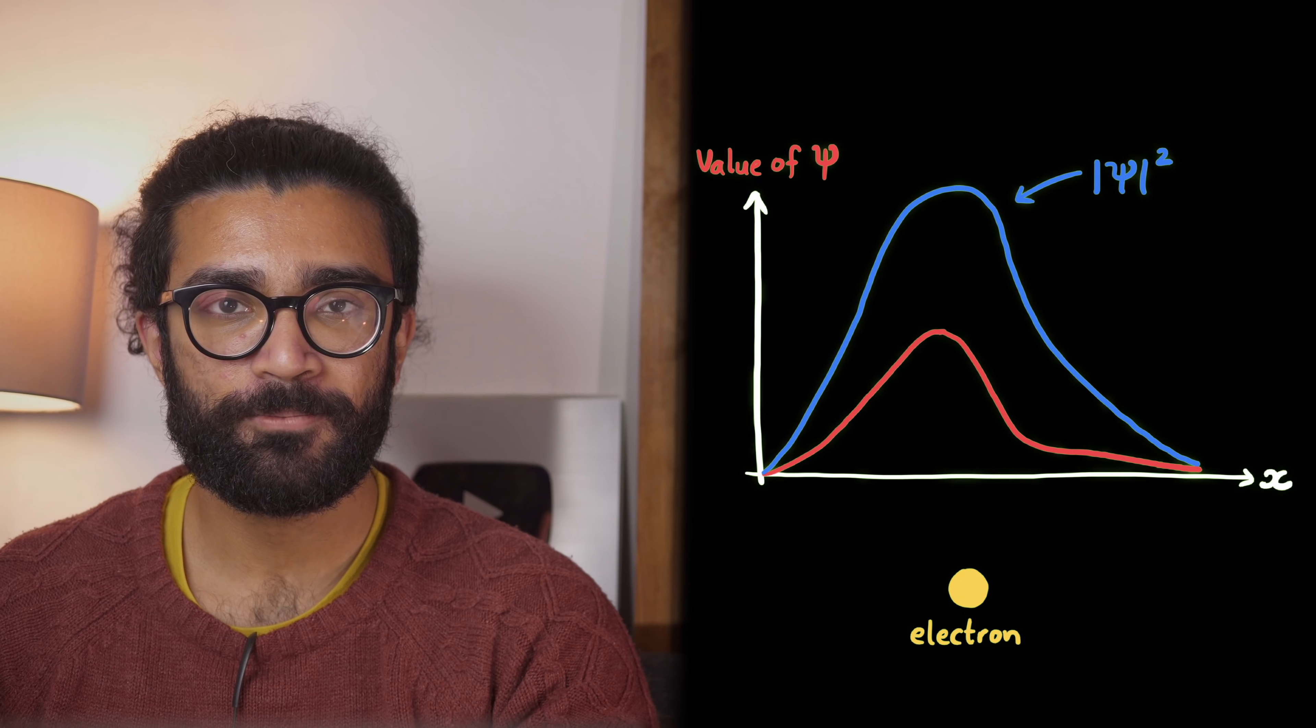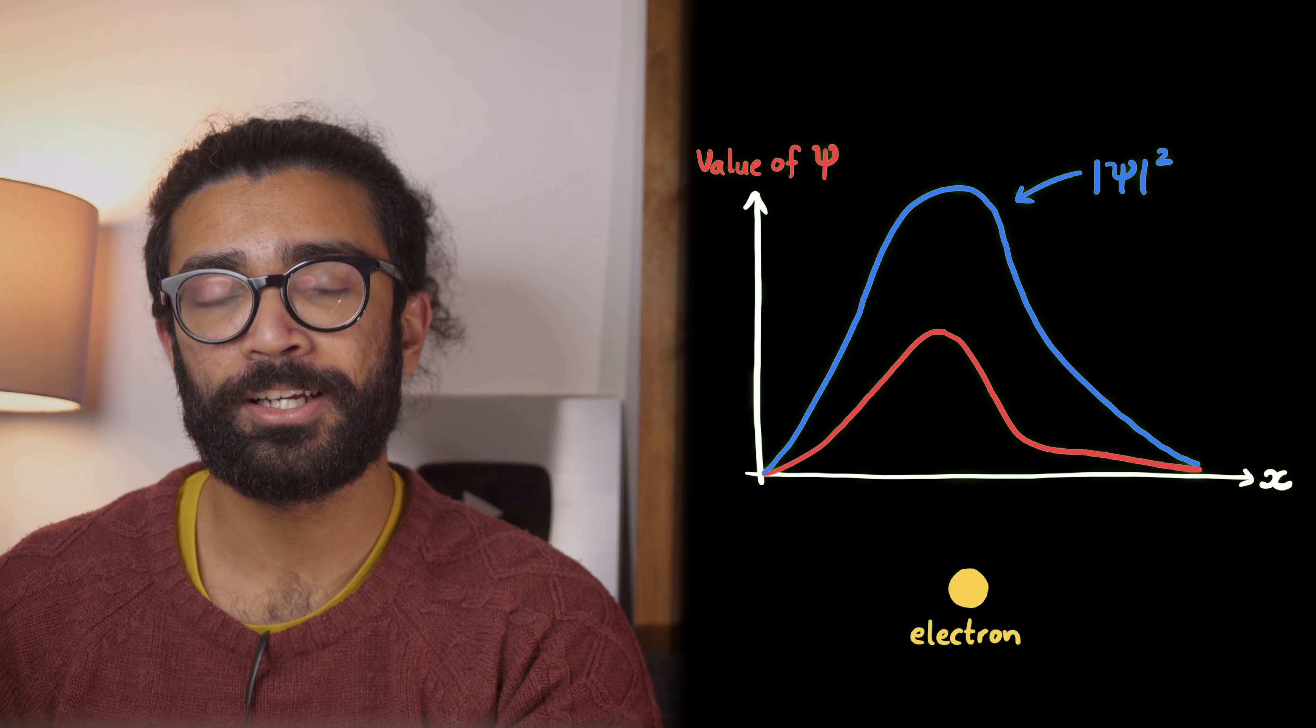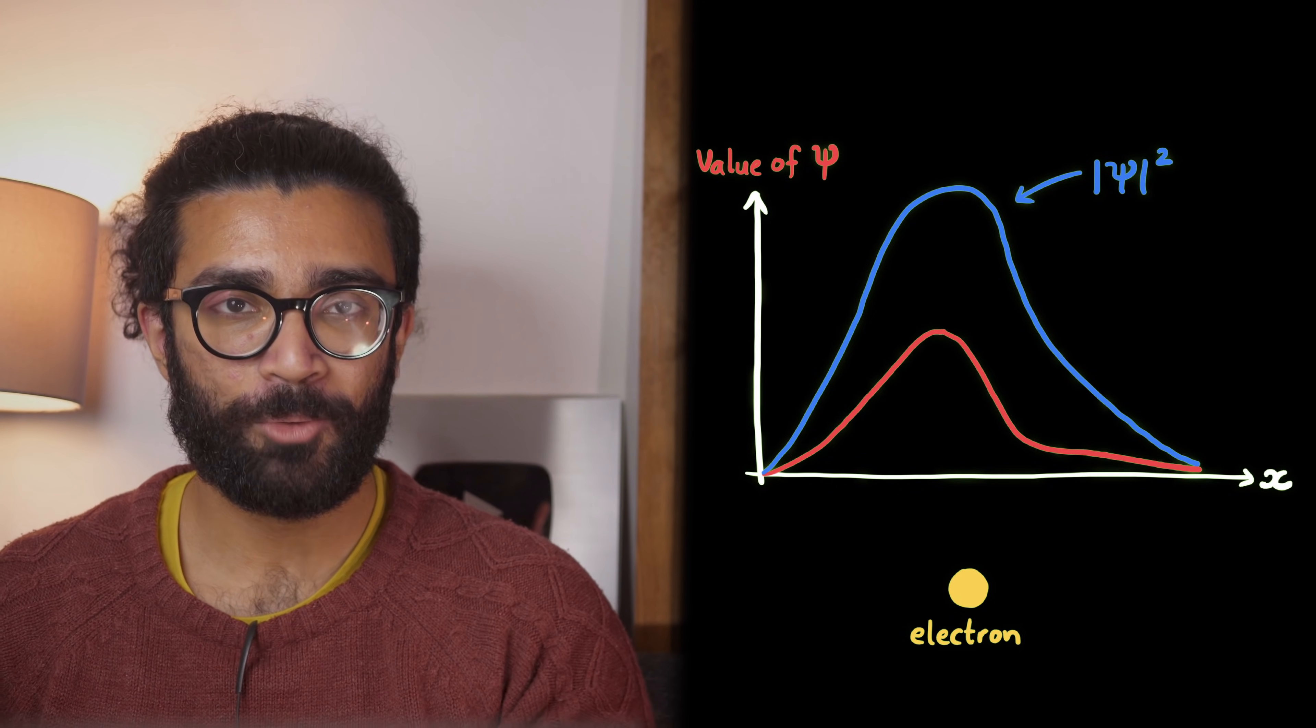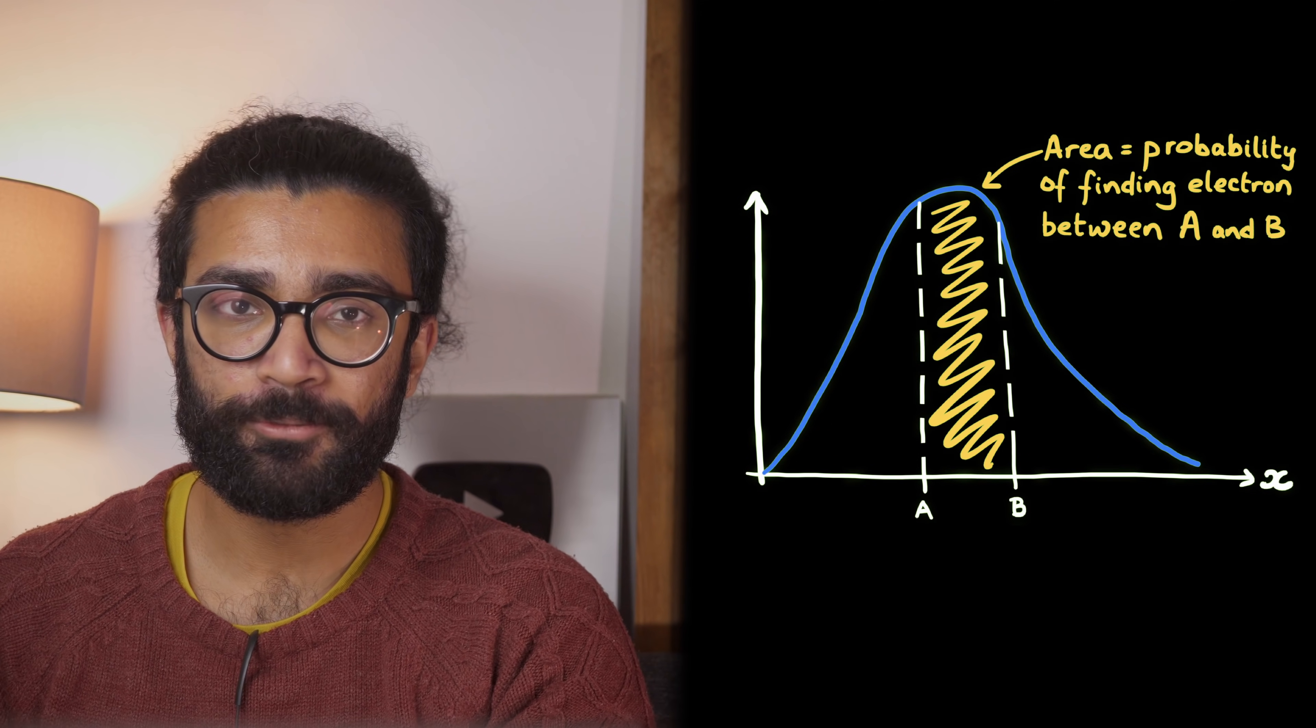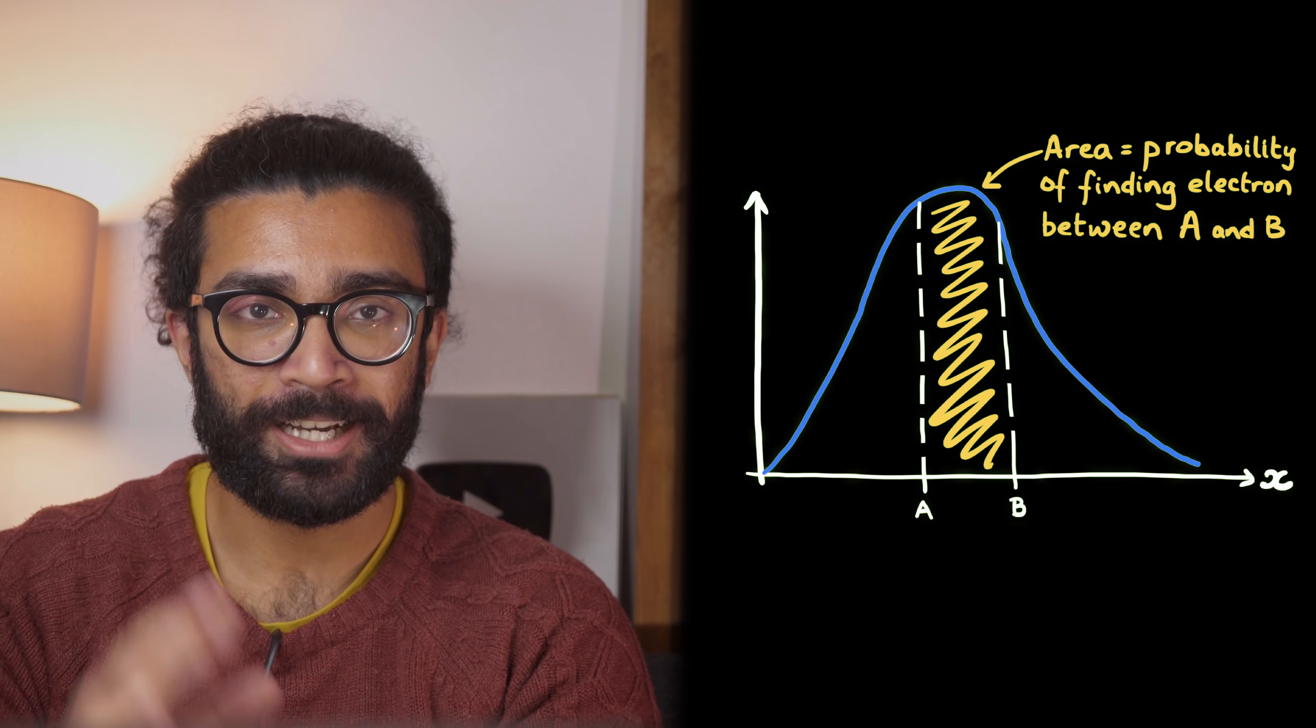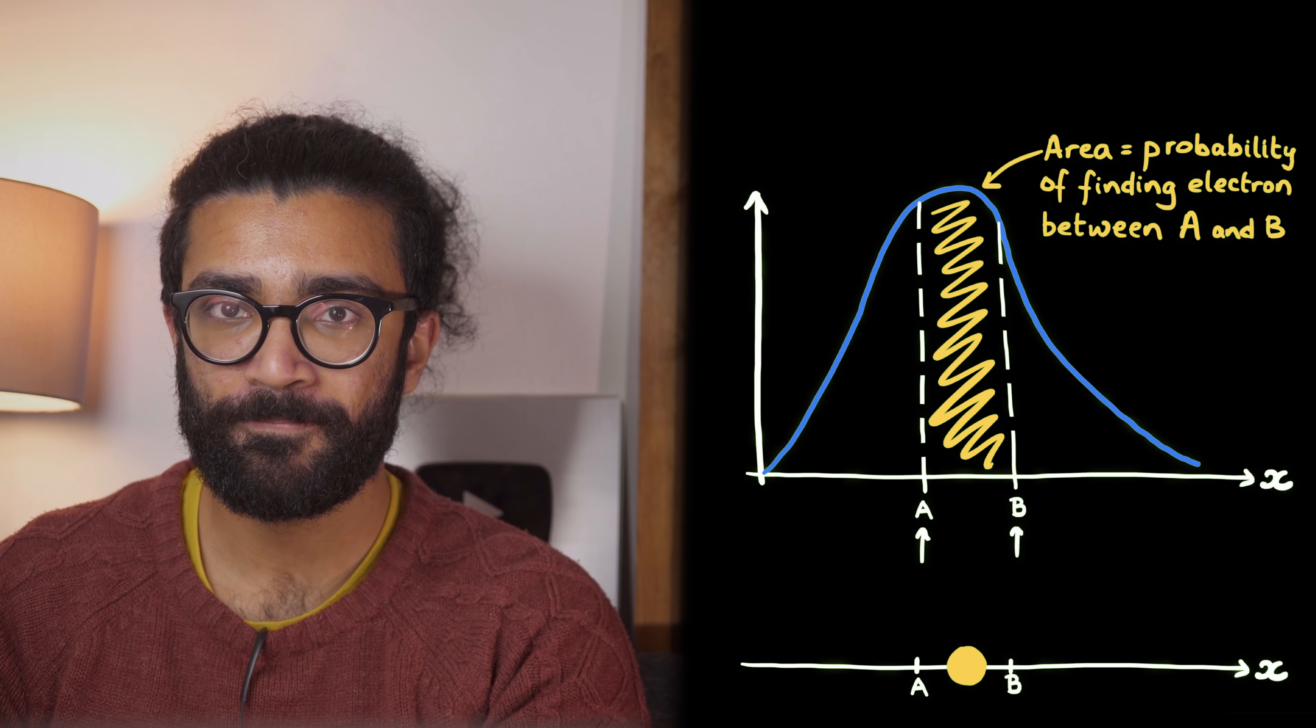In the most simple case, the wave function tells us the likelihood of finding our electron at different points in space. The way this works is that we take the square modulus of our wave function and we find the area under the graph between two points, say A and B. This area directly gives us how likely we are to find our electron between A and B.